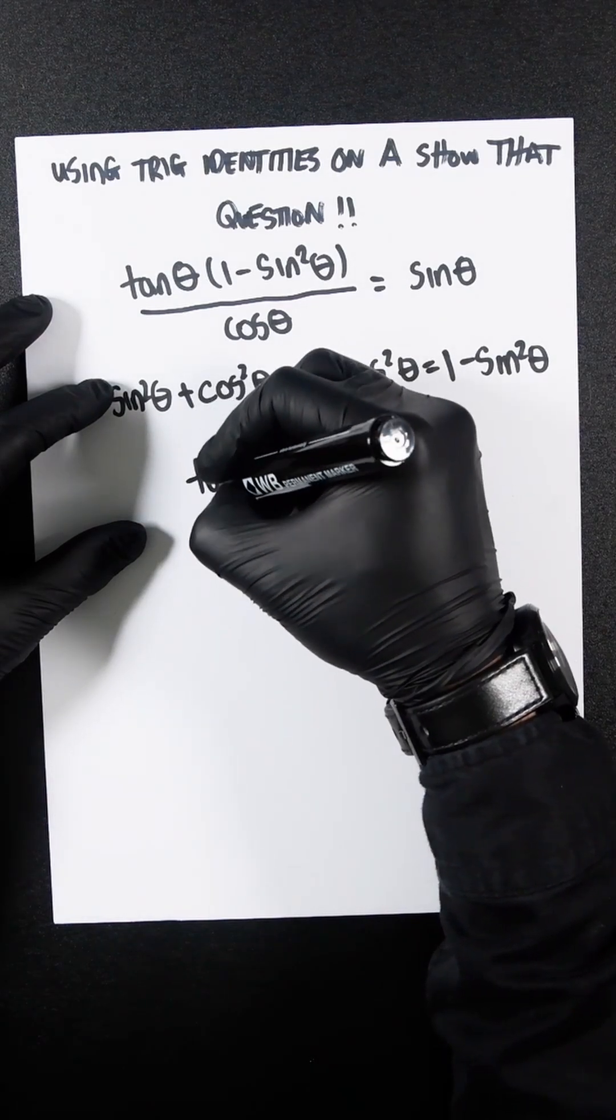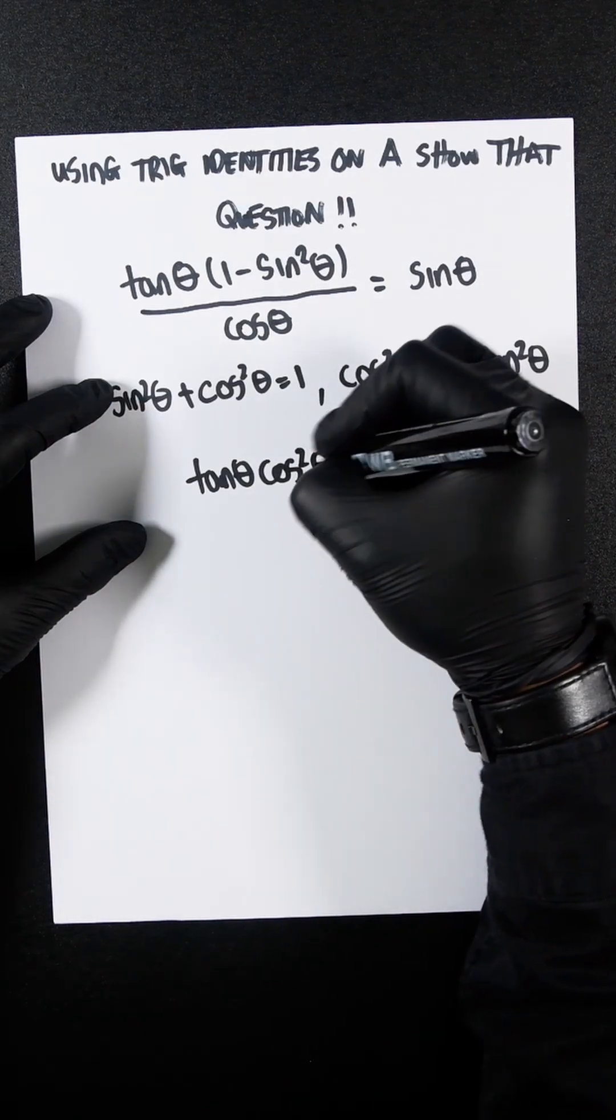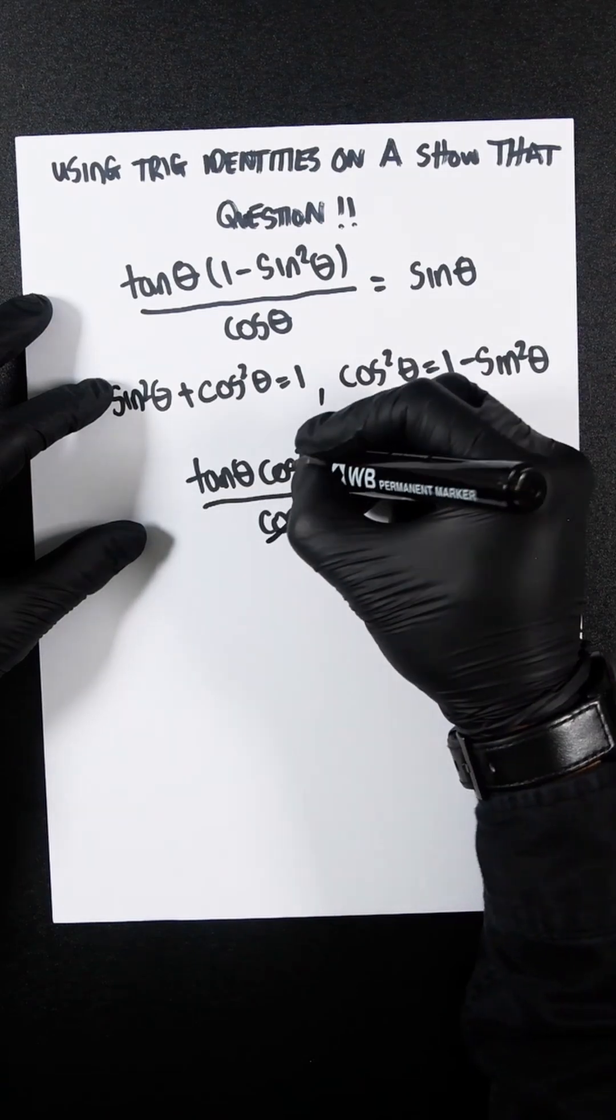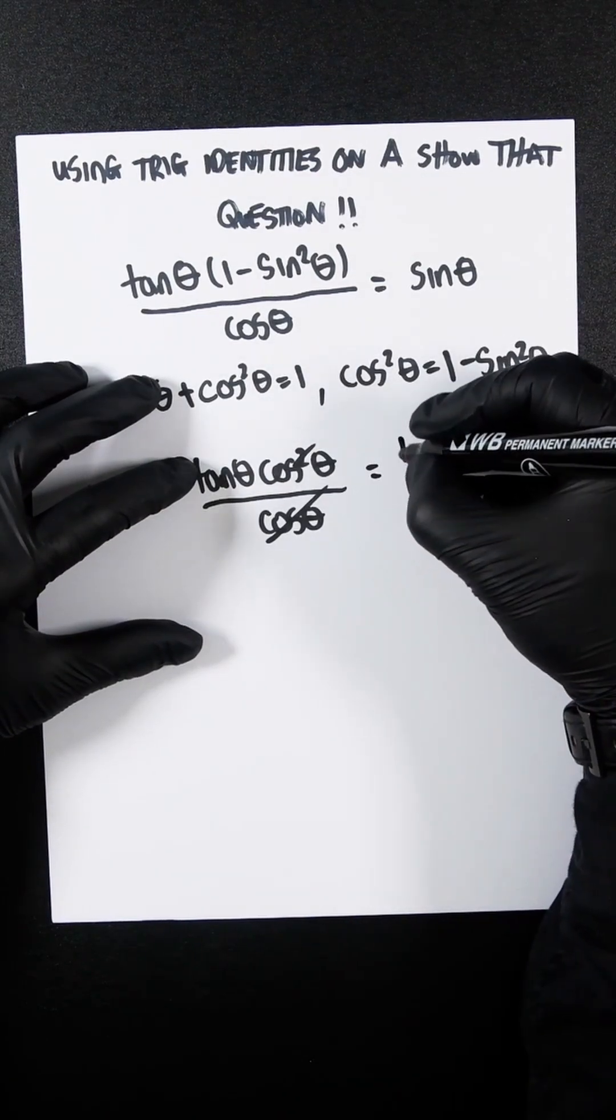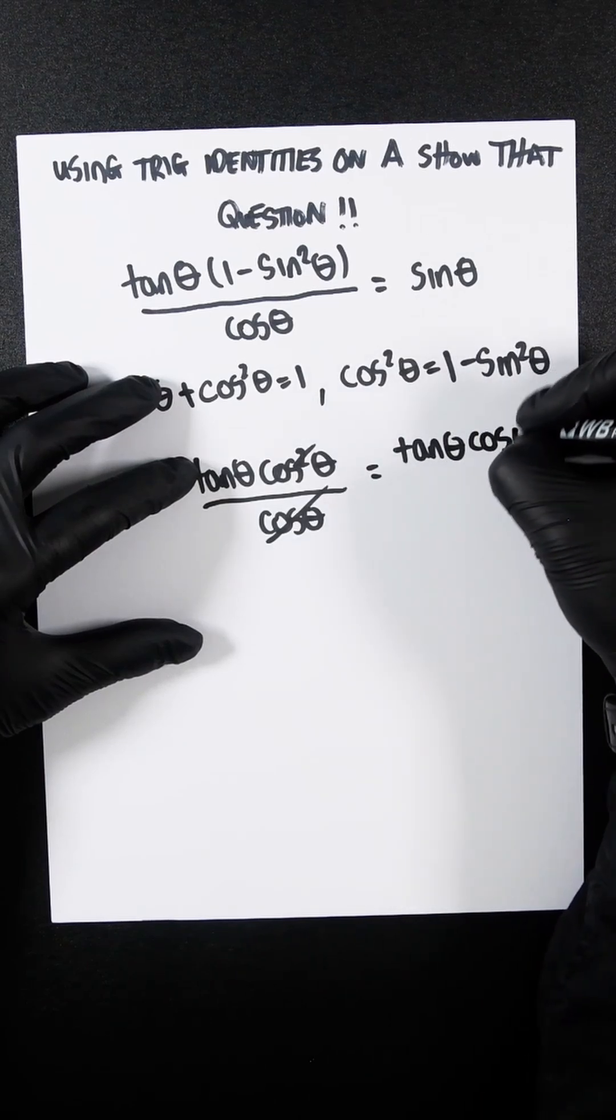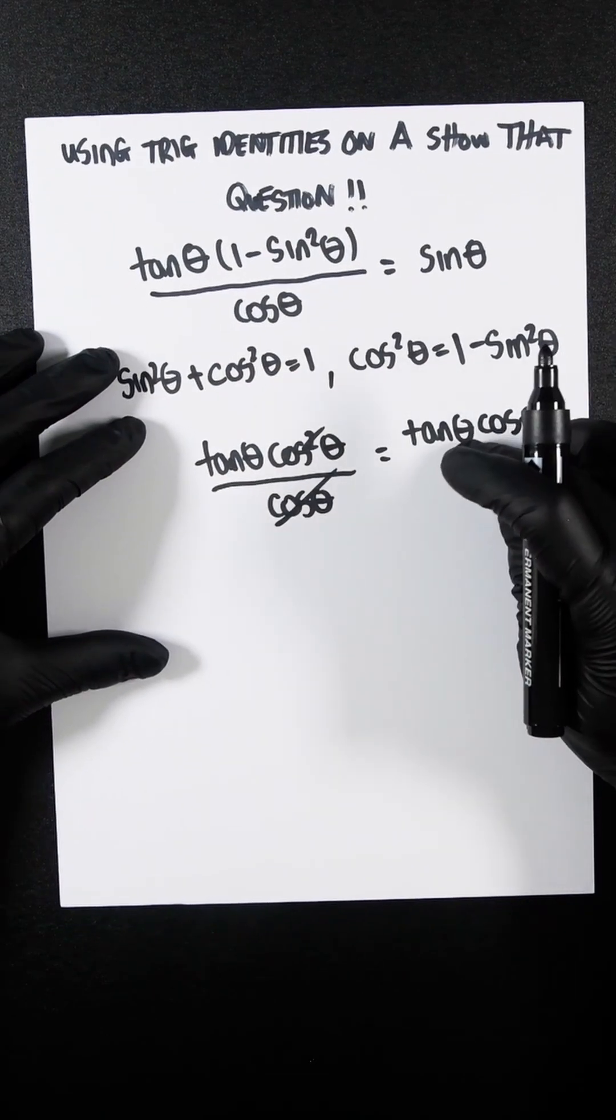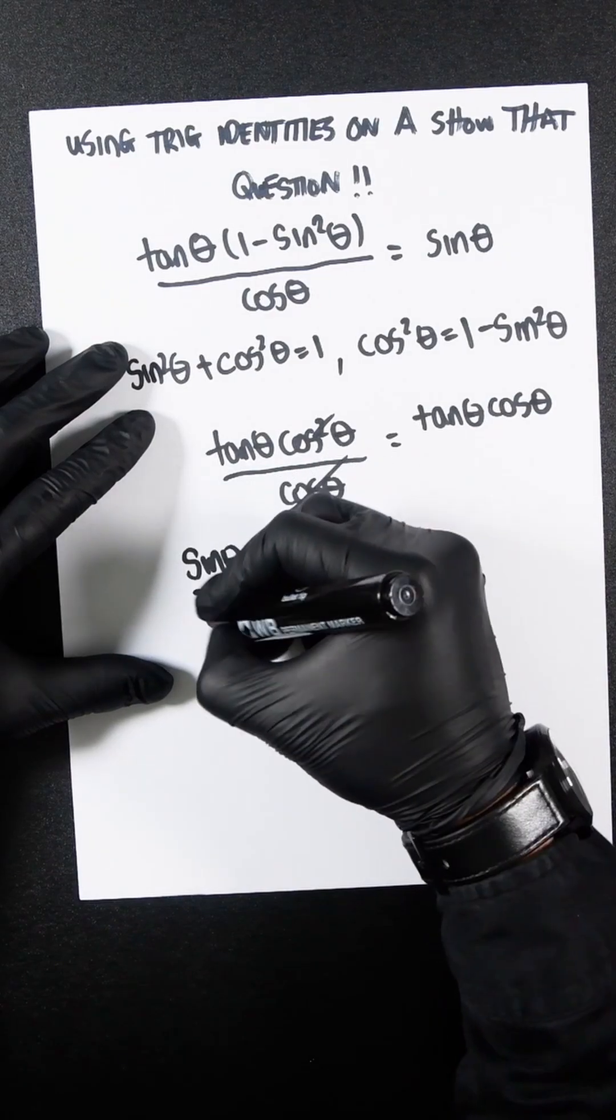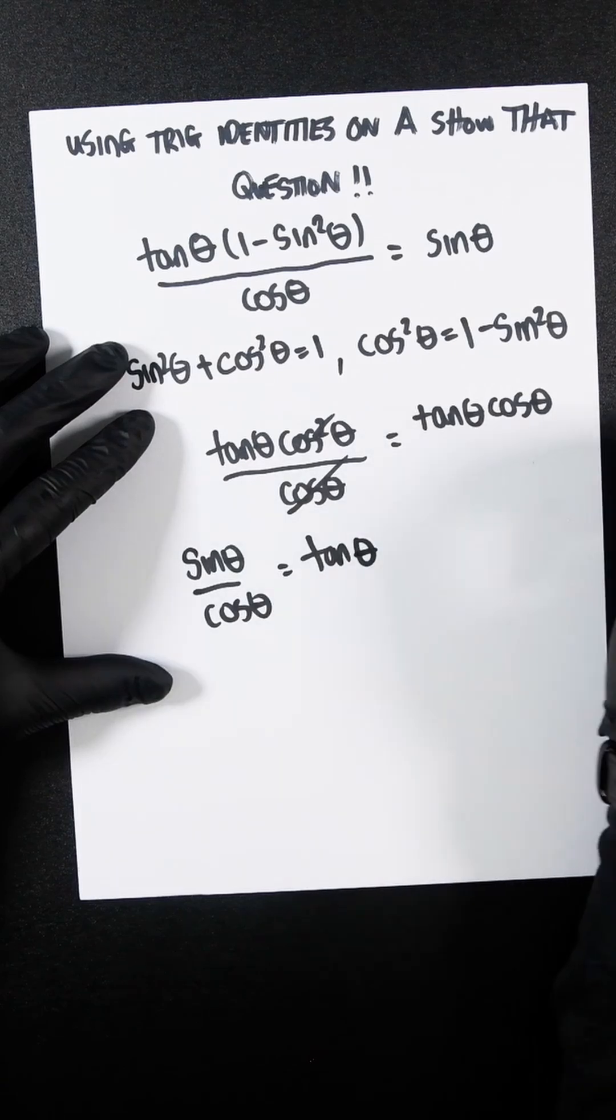You're going to then get tan theta cos squared theta over cos theta, and they cancel out. So you've now only got tan theta cos theta. And we know from another trig identity that sin theta divided by cos theta equals tan theta.